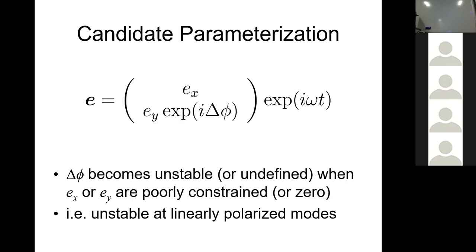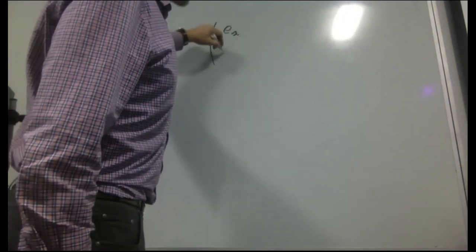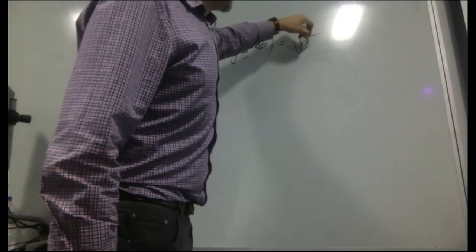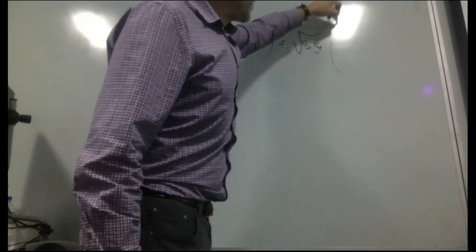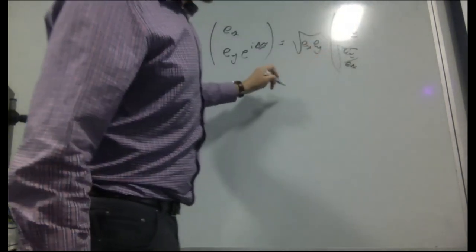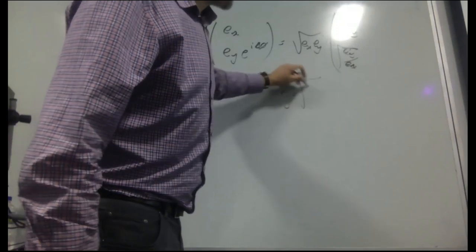The problem with this parameterization is that there are three numbers: Ex, Ey, and Delta_phi. We could have written this differently by taking out some common absolute scale factor and rewriting using the gain ratio G = Ey/Ex (and its inverse square-rooted), so this one number G gives us the gain ratio. We can then describe the polarization state in terms of G and Delta_phi, and the absolute flux state in terms of the factored-out scalar, with the wave term e^{i*omega*t} following.